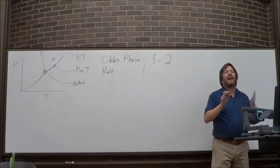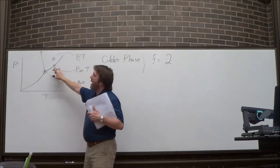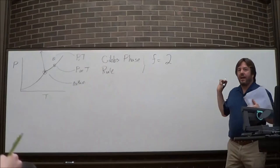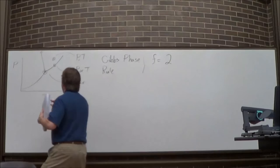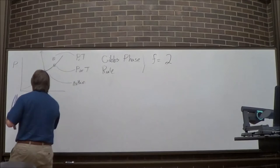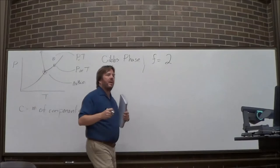We can automatically say there are two degrees of freedom from pressure and temperature, since those are the intensive variables that define equilibrium on a phase diagram. Now I'll introduce C, the number of components. I'll use ethanol and water as examples.